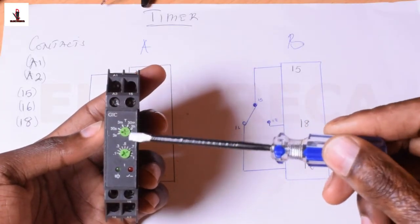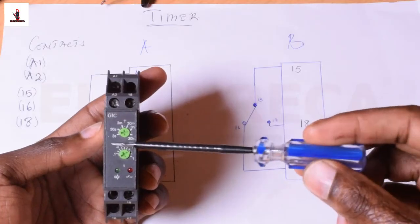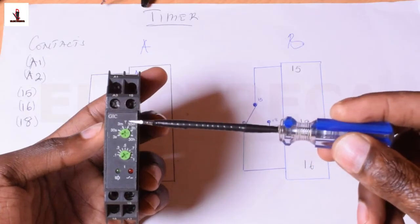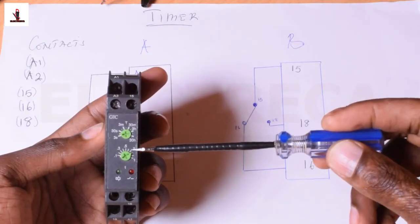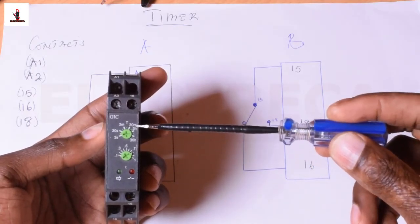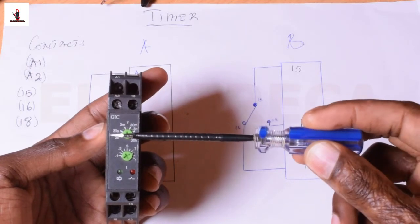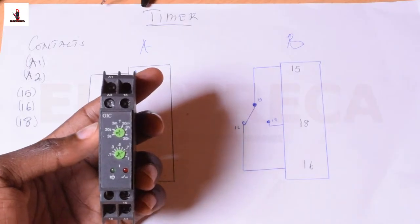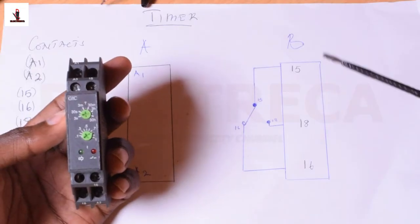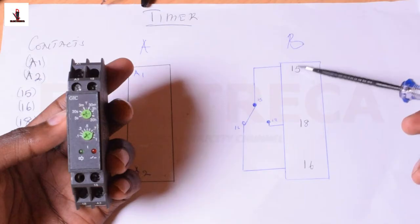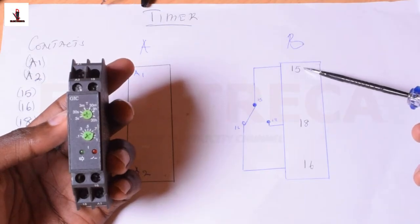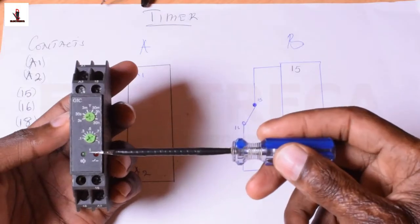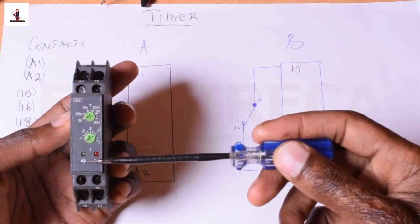You see it has got a dial, some two dials here. And here you have got time in seconds, time in minutes, time in hours. You have 30 hours, three hours, 30 minutes, three minutes, 30 seconds, and three seconds. Now that means that your time that you set—the moment because this is an on-delay timer.